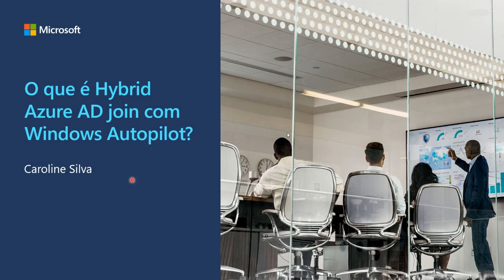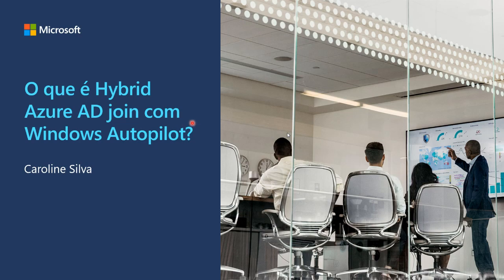Boa tarde a todos. Como a Carolina falou, se a sua organização esbarrou em alguma das limitações atuais do ingresso com o Azure AD somente, a recomendação é partir para o Join híbrido, que basicamente consiste em ter a identidade do seu dispositivo no ambiente on-premises — ele vai fazer parte do seu AD local — ao mesmo tempo que essa identidade também vai existir na nuvem, então ele é registrado no Azure AD, tornando um cenário híbrido. Veremos nessa sessão quais são todos os componentes de configuração para passar um dispositivo pelo processo do Autopilot e tê-lo nesse estado híbrido.